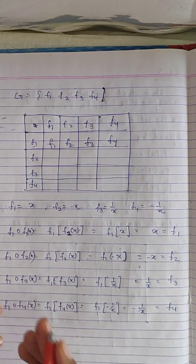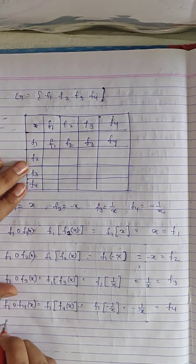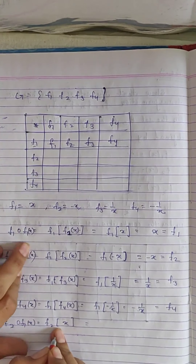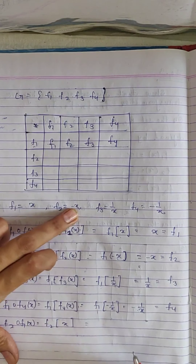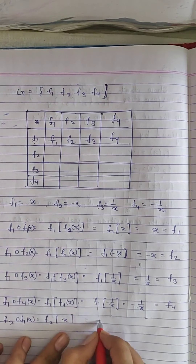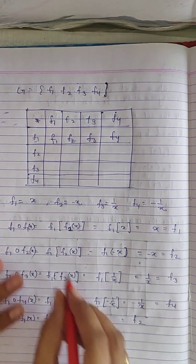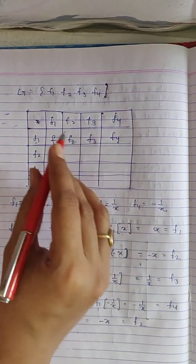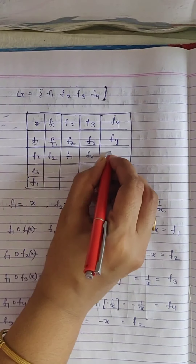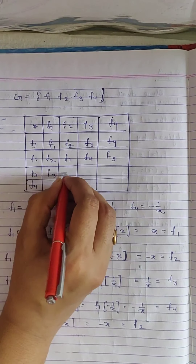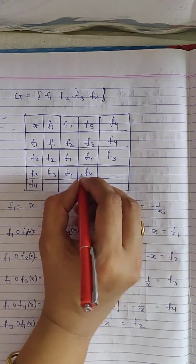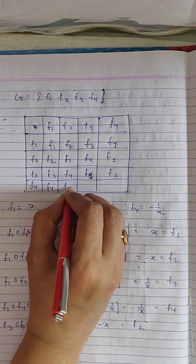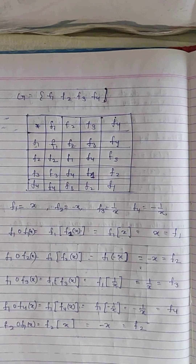Computing f2∘f1: (f2∘f1)(x) = f2(f1(x)) = f2(x) = -x = f2. Similarly, all remaining entries can be filled. Completing the table directly: the second row is f2, f1, f4, f3; the third row is f3, f4, f1, f2; the fourth row is f4, f3, f2, f1. The identity element f1 appears in each row and each column.